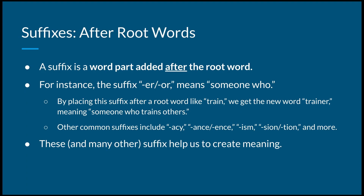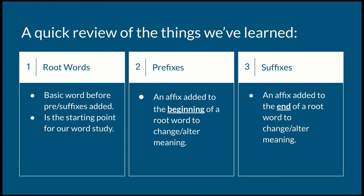So as a quick review of our simple word parts: we have root words, which are basic words — they are the building block of our words. We have prefixes, which is an affix or an addition that's added to the beginning of the root word to change the meaning. And then we have suffixes, which do the same exact thing as prefixes — they're just added to the end of the word.